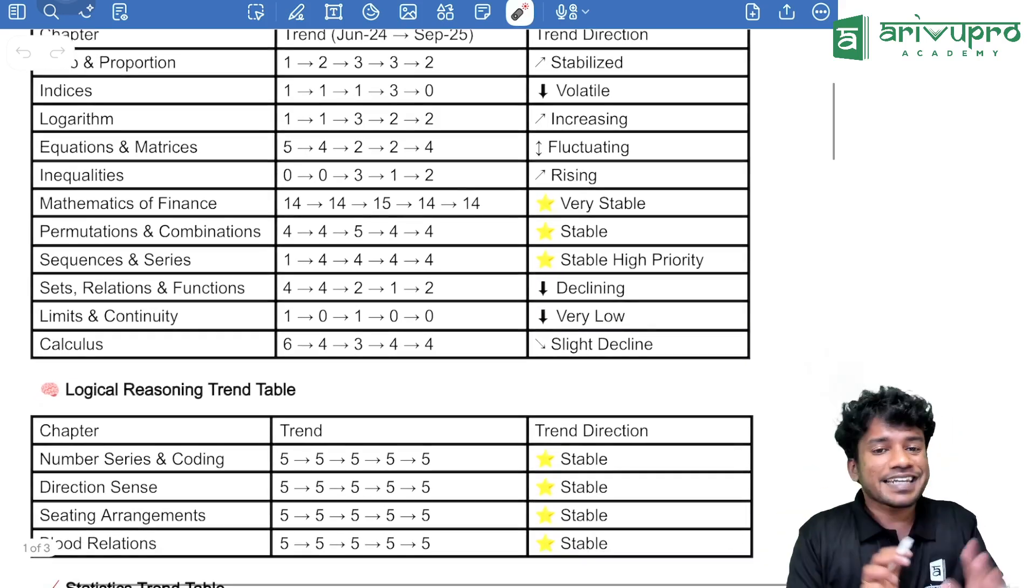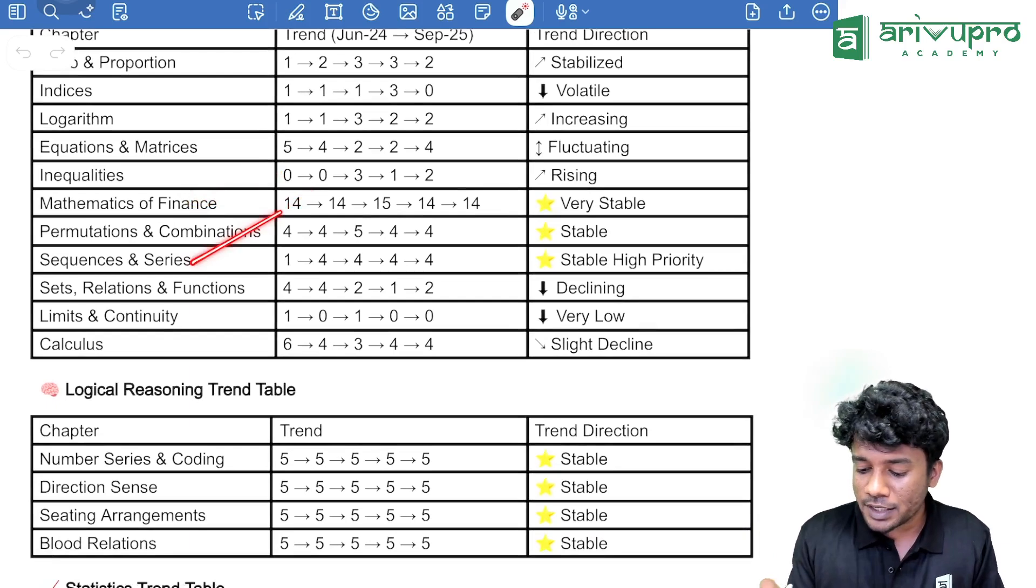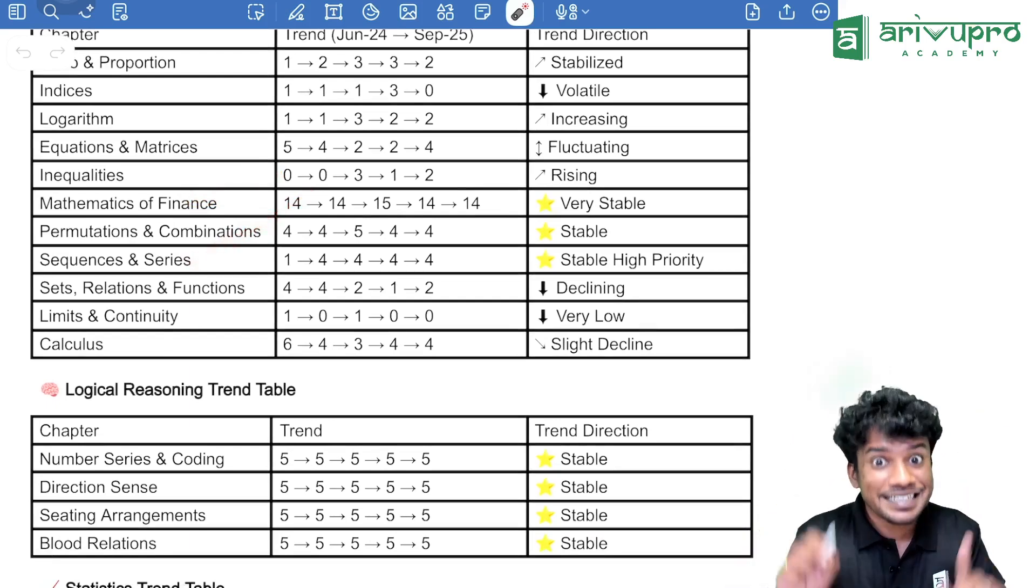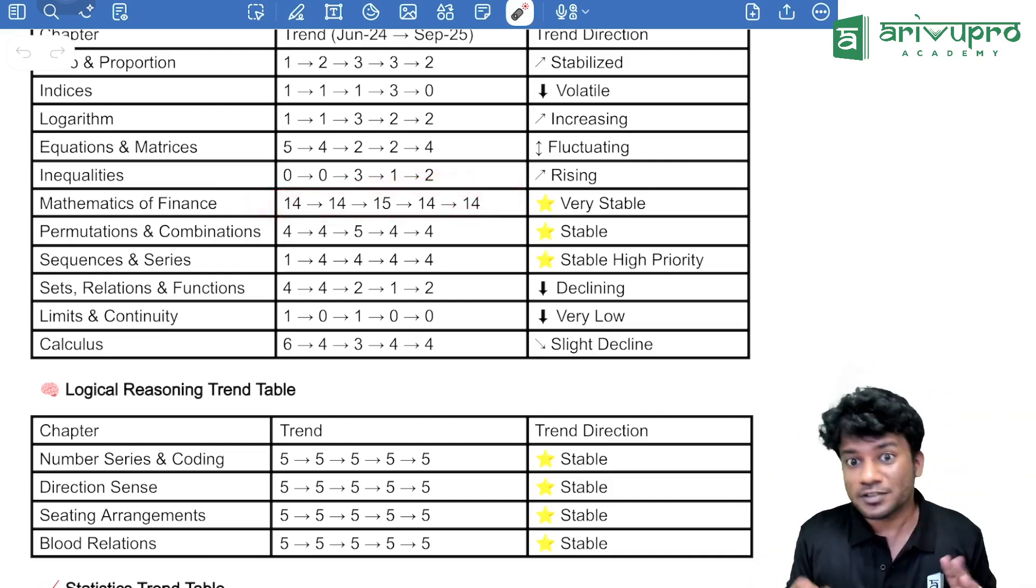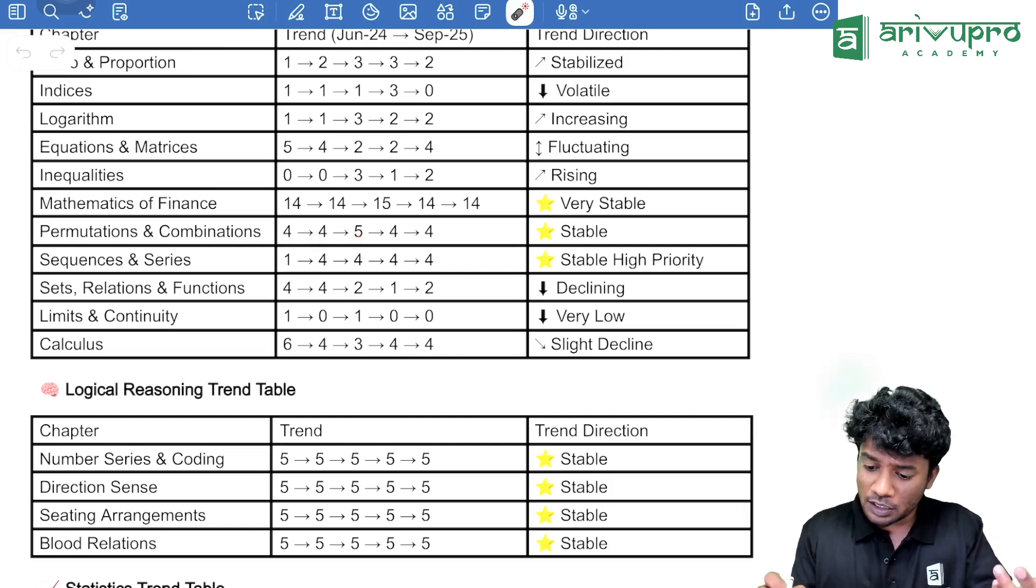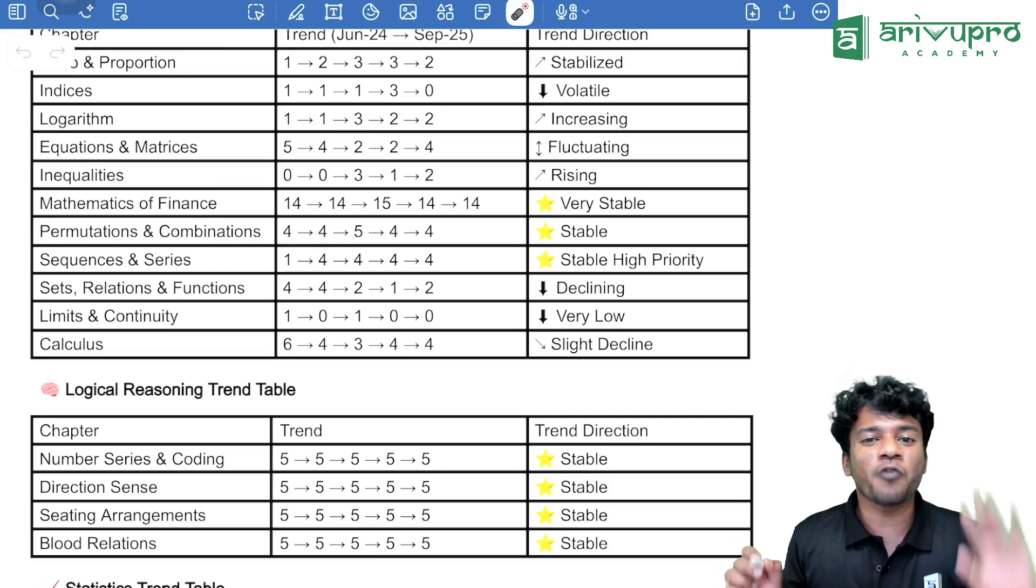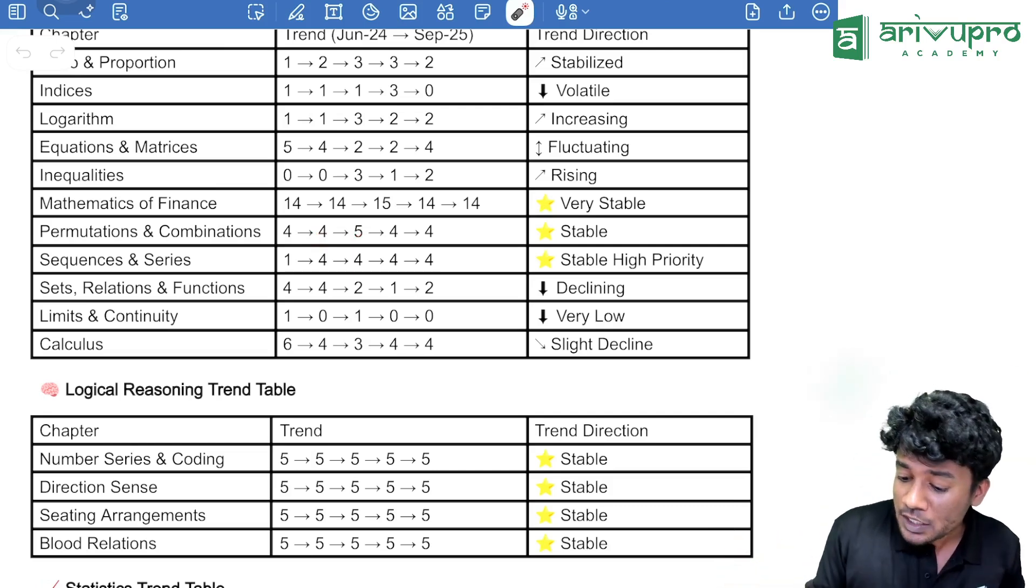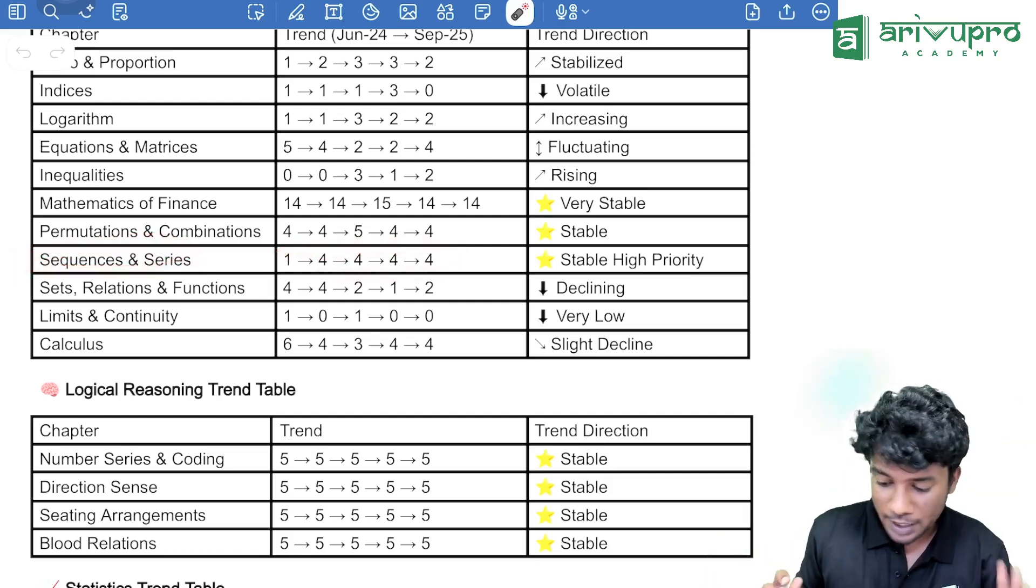Now, I will come to the very stable topics. Mathematics of finance, permutation combination and sequence and series, there was a usual trend in those particular topics. In chapter number 4, mathematics of finance, you can expect 14 marks and permutation also, it is like 4, 4, 4, 5, 4 and 4. That means, there is a stable 4 marks. Minimum 4 marks can be there for you. Then, coming to sequence and series, that is also a stable 4 marks is there in the previous year attempts.